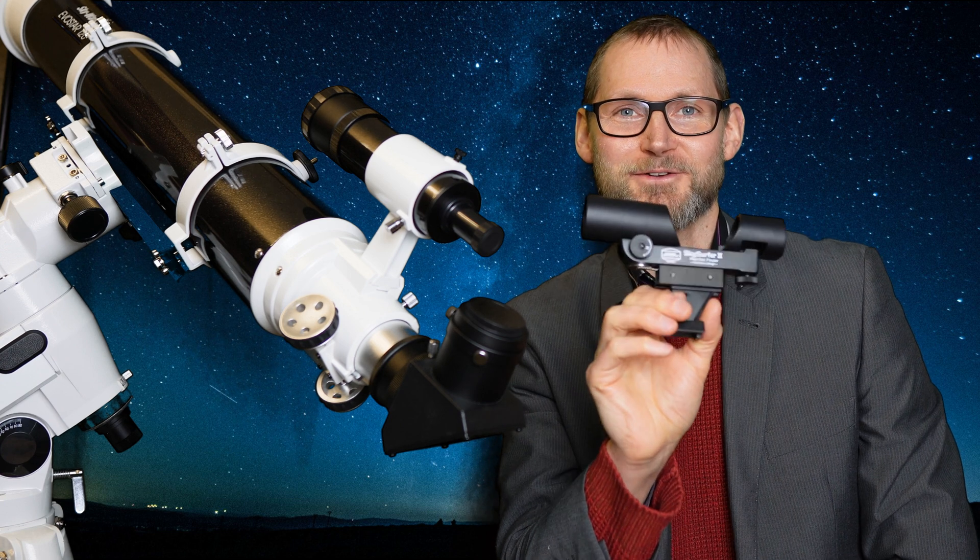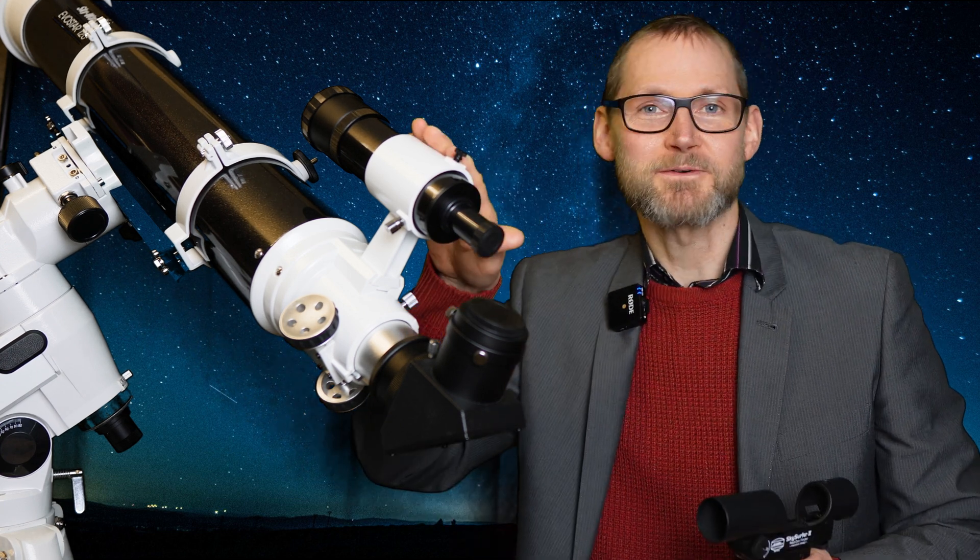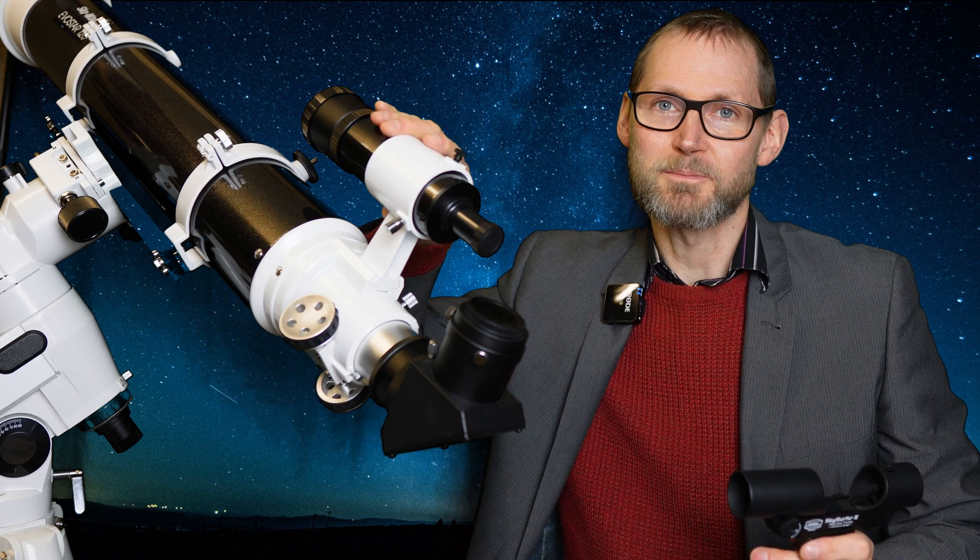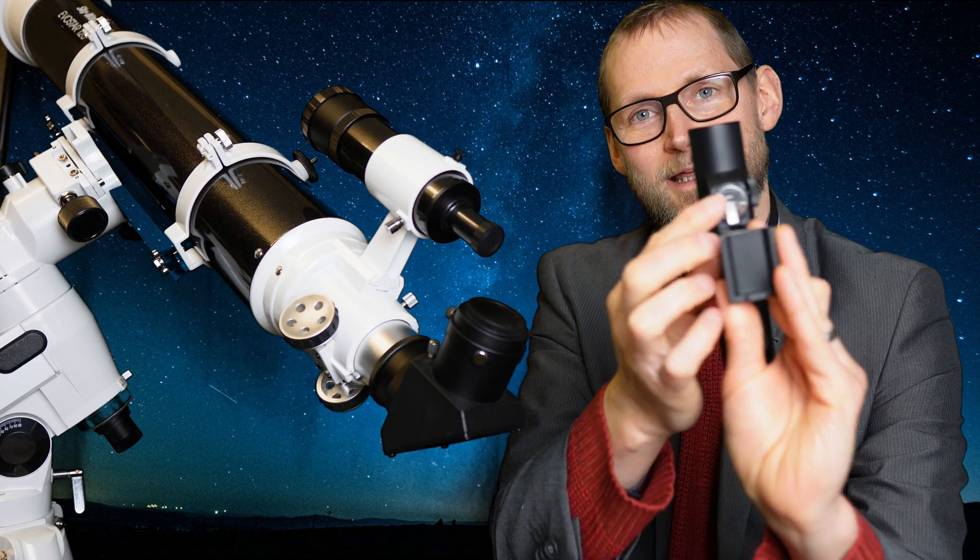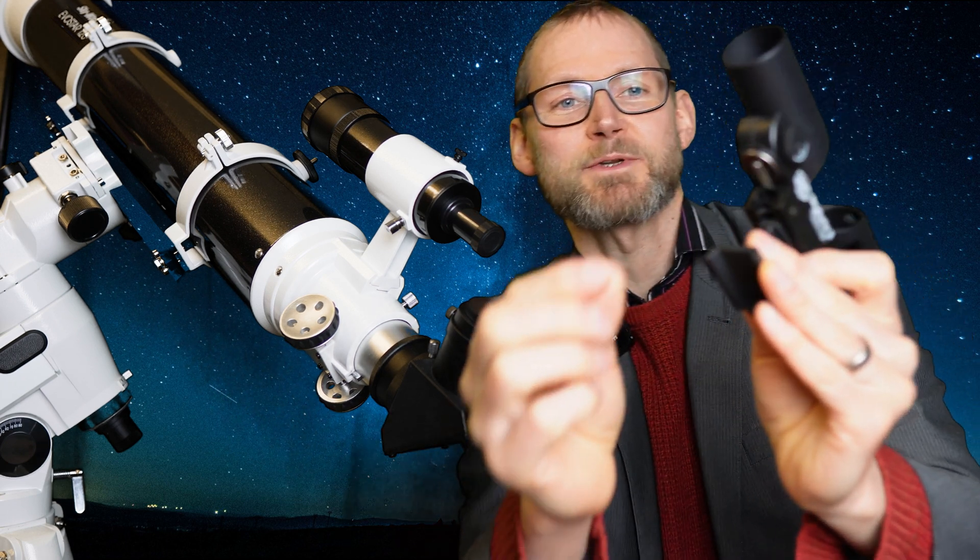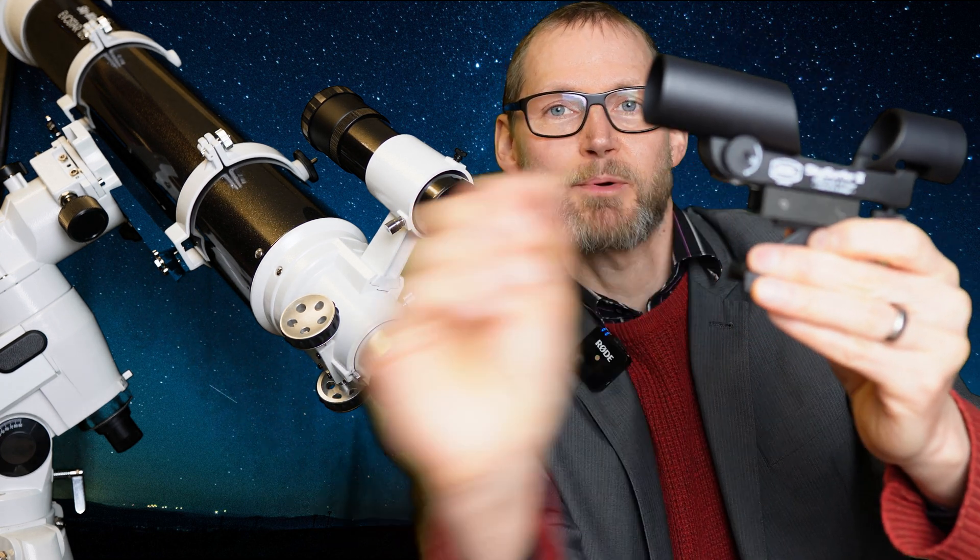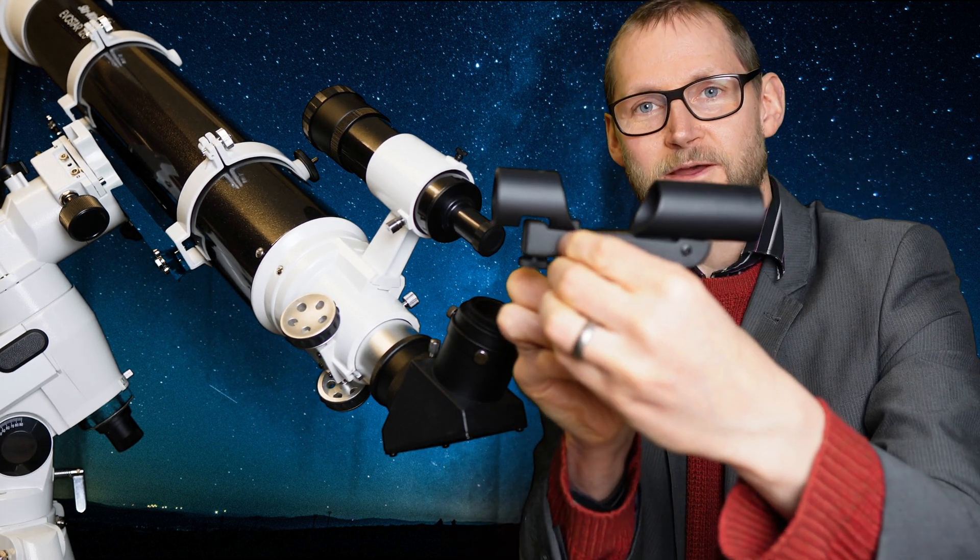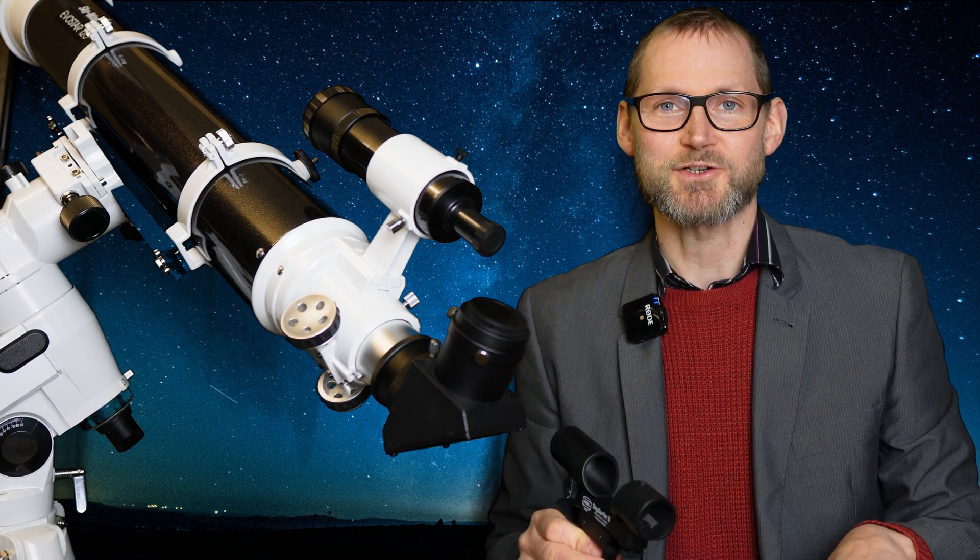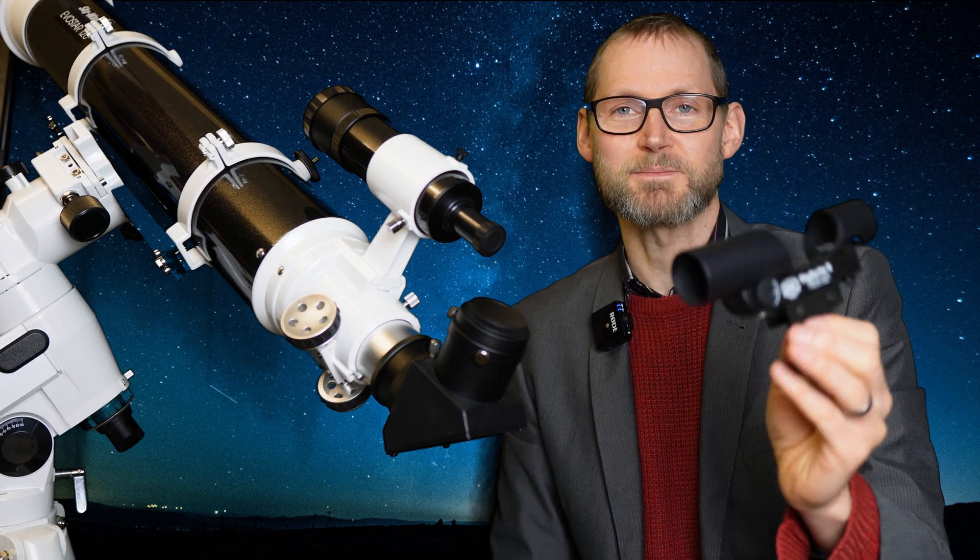Now another tip is to not forget to turn your red dot finder off. The optical finder doesn't have any batteries, it's just purely optics, but this has a little battery there. When you first get one of these it will have a plastic tab that you kind of pull out to activate the finder scope, but always remember to turn it off at the end because there's nothing worse than getting back out the next session and then realizing your finder scope's dead and you need to replace the battery.